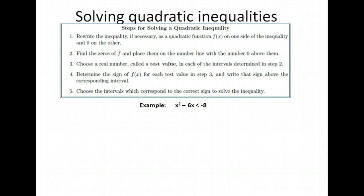A lot of people dislike quadratic inequalities because they can be a bit cumbersome, but there is an exact step-by-step process that you go through every time, and as long as you follow those rules, you will be okay. This is straight out of your book. To solve quadratic inequalities — meaning inequalities that have x squared — we rewrite the inequality so that zero is on one side and everything else is on the other, just like when we solve quadratic equations.